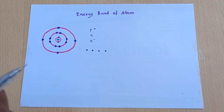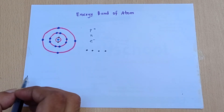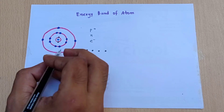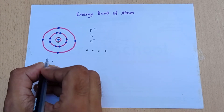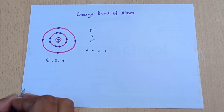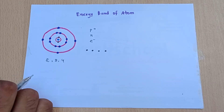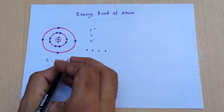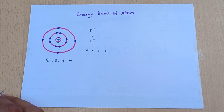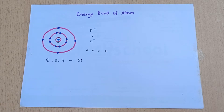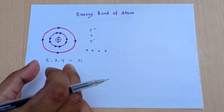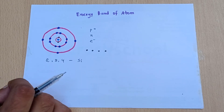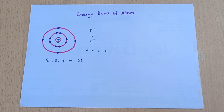Looking at the number of electrons in this atom, there are a total of 14 electrons: 2, 8, and 4. So the electronic configuration is 2, 8, 4. The atomic number of this material is 14, which corresponds to silicon. Silicon has 14 electrons, and this atomic structure represents the silicon atom.